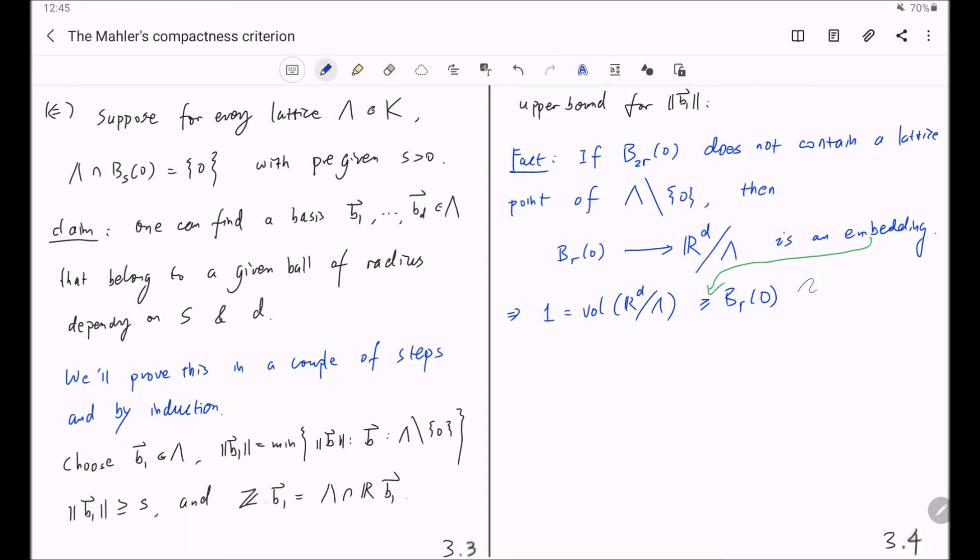But what is the volume or the measure of the ball centered at 0 with radius r? We know by multivariable calculus, this is equal to constant times r raised to the power d. And this constant only depends on d. And this gives the upper bound for r such that the ball of radius 2r centered at 0 does not contain a non-trivial lattice point of this lambda.